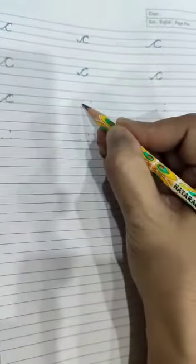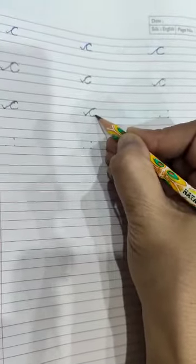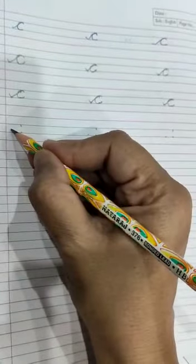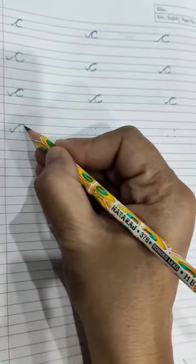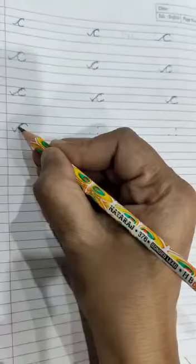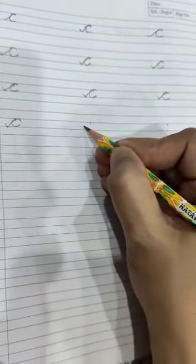Very good. Make a curve and then make a slanting line upward and then make C. Make a slanting line upward, bring it little bit forward and make C.